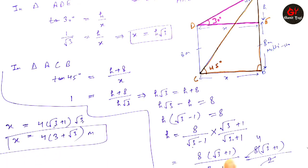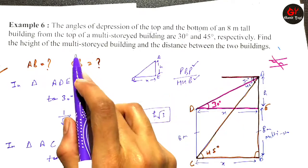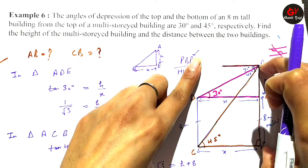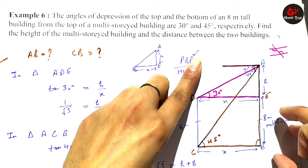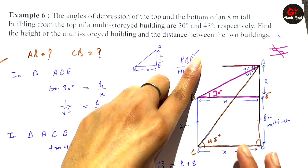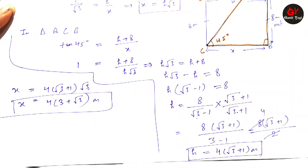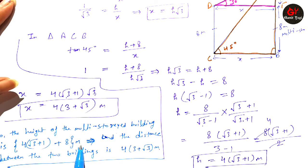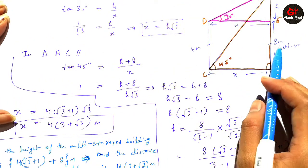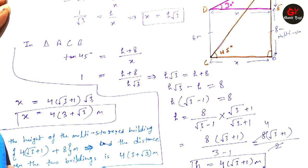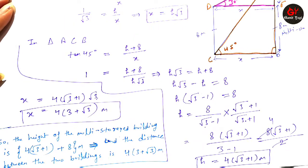As you can see, we have found both required values. The height of the multi-storied building is found using h, and the total height of the multi-storied building is the full height. After writing the final statement, the problem is complete.